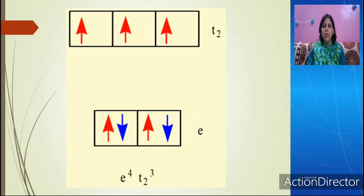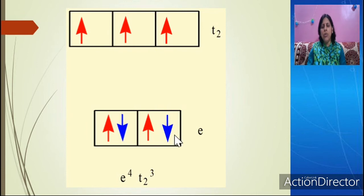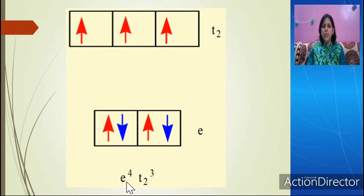Now this is the D7 configuration. The pairing in E increases further, giving 4 electrons in E and 3 electrons in T2, so the electronic configuration becomes E4, T2(3).